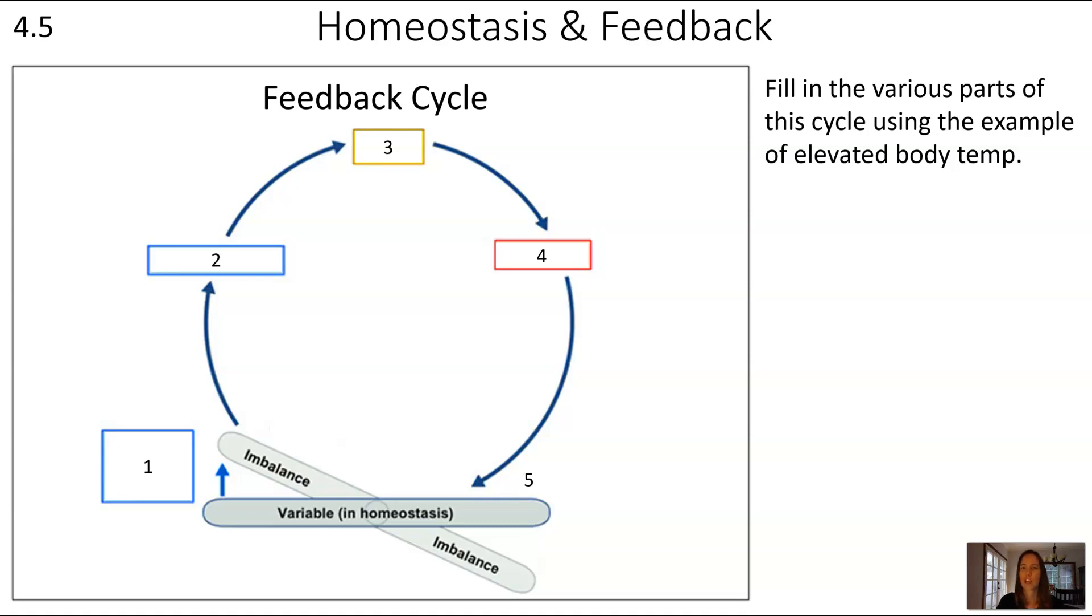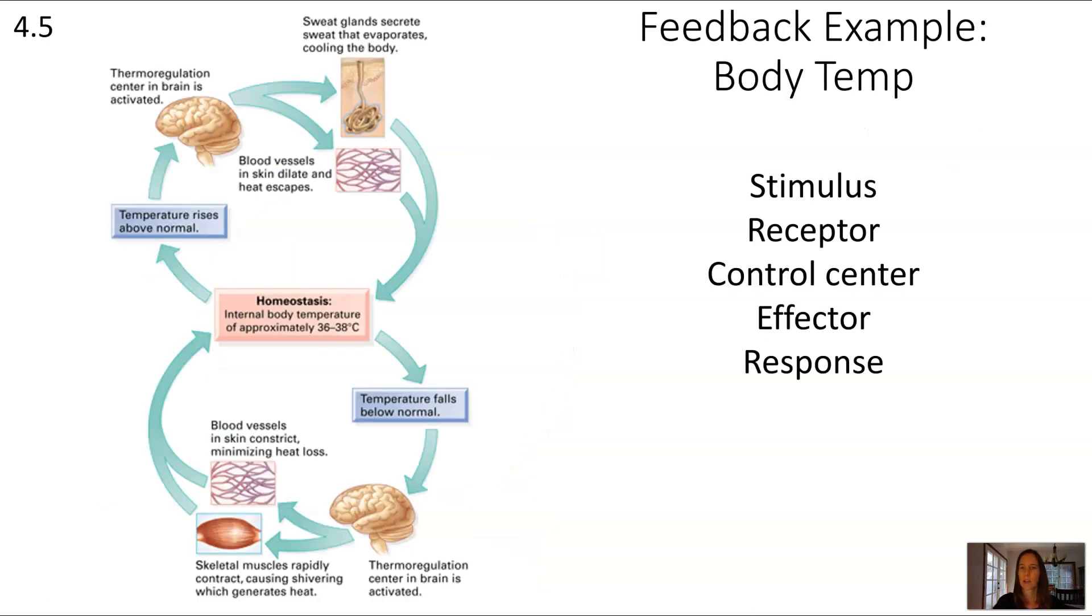Let's try to make this generalized diagram a little bit more specific. See if you can fill in the various parts of this cycle using the example of elevated body temperature. This diagram shows both elevated body temperature as well as reduced body temperature. For elevated body temperature, we can look at the top half of this diagram. And you see the original stimulus is that the body temperature rises above normal. That's the stimulus.